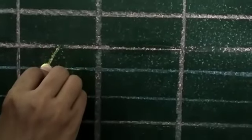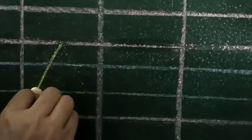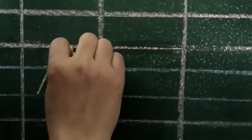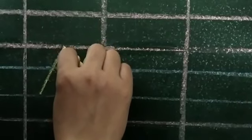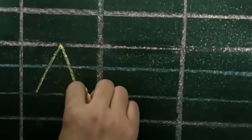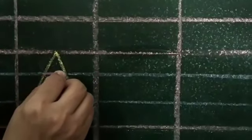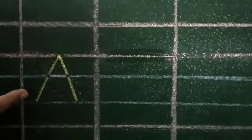To write A, we will start from the red line. First of all, we will draw a slanting line from the red line till the first blue line, then to the second blue line. Then from the same point, draw a slanting line in the opposite direction — from the red line till the second blue line. Now draw a sleeping line on the first blue line. What is this? This is A.